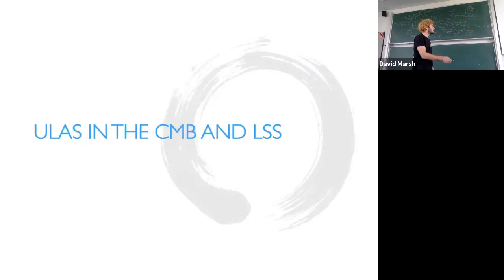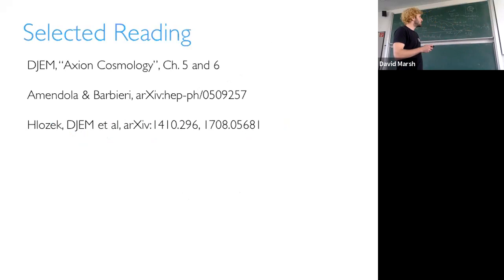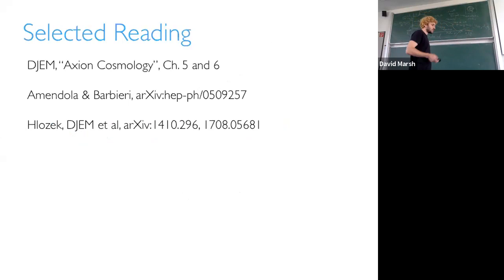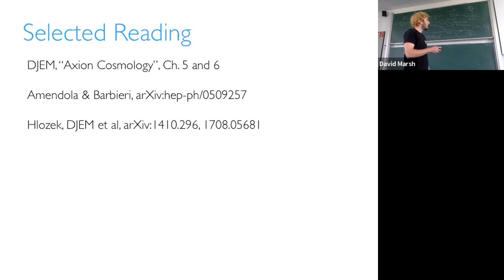Reading for this part: chapters five and six in my review. The paper by Mendel and Barbieri from about 15 years ago really does the first precision cosmology job of constraints on axion masses and densities using WMAP-1 data from Lyman-alpha forests and other measures of large-scale structure. Then two papers by myself, René Lajeck, Danbury, and Pedro Ferreira, which do the details of the CMB analysis.